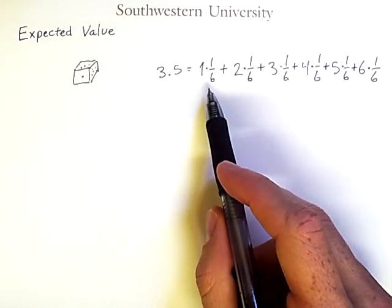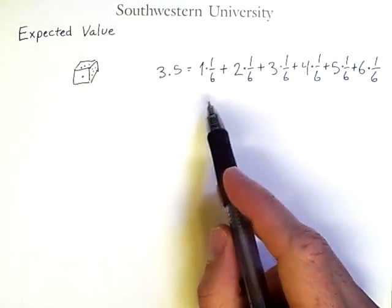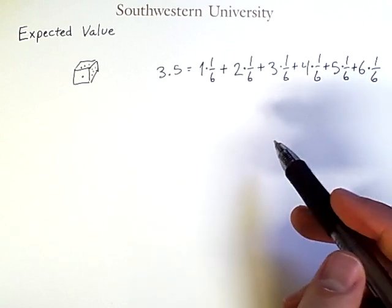Now, because the probability is equal for each side of the die, I could have just added these values up and divided by 6, which, as I mentioned before, is the average.